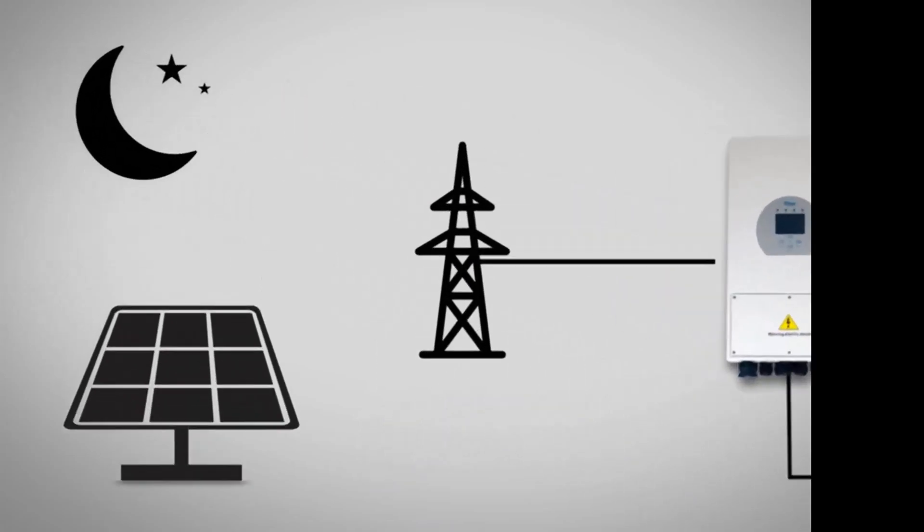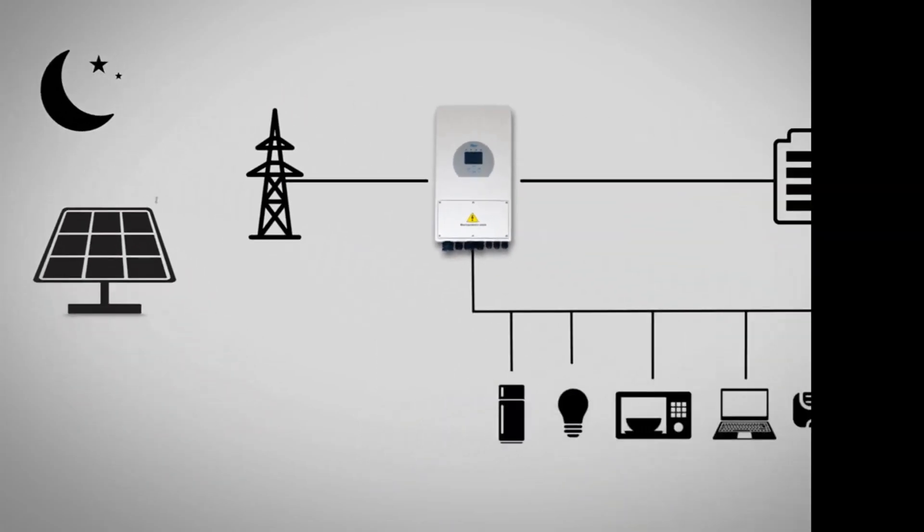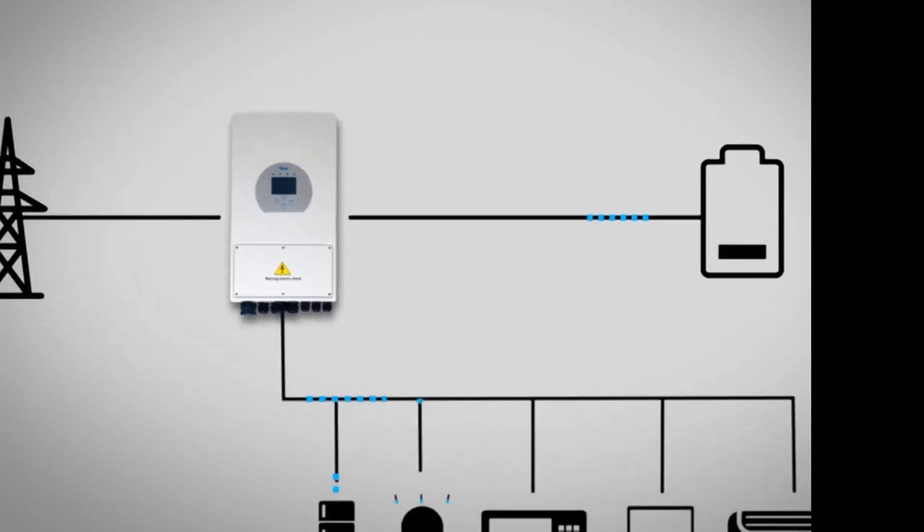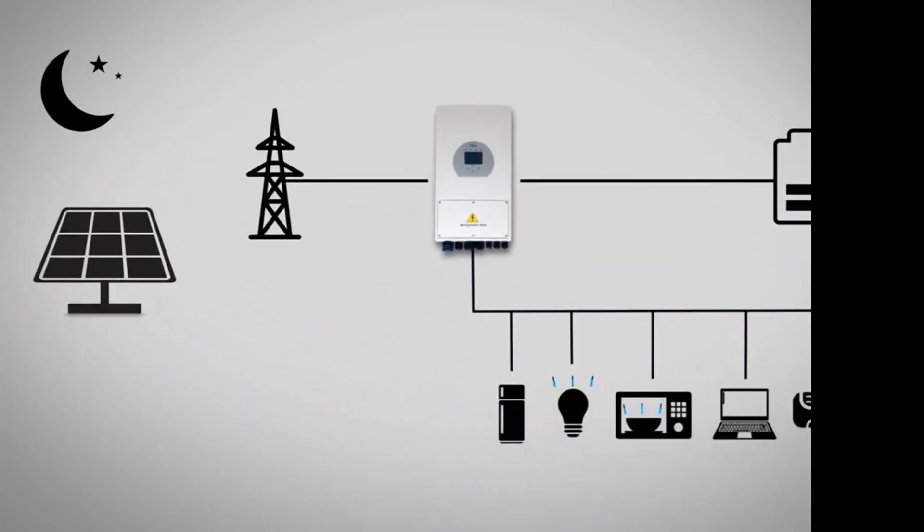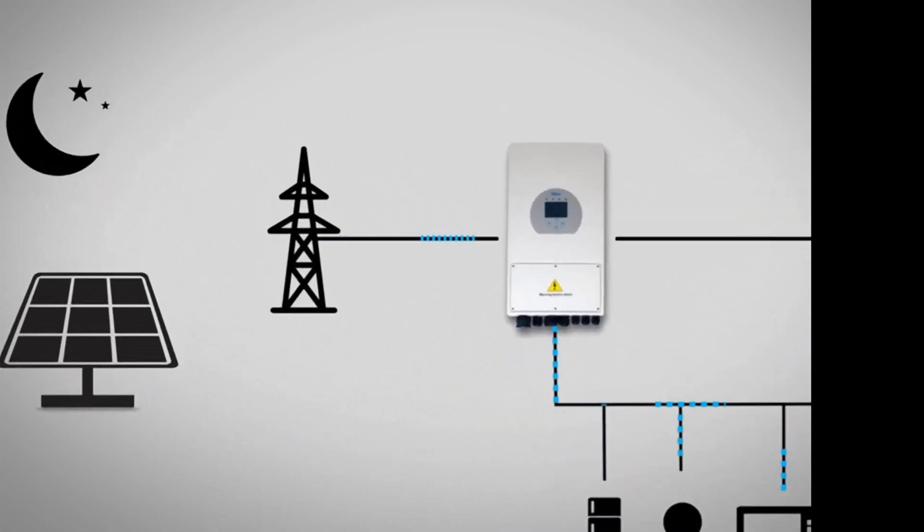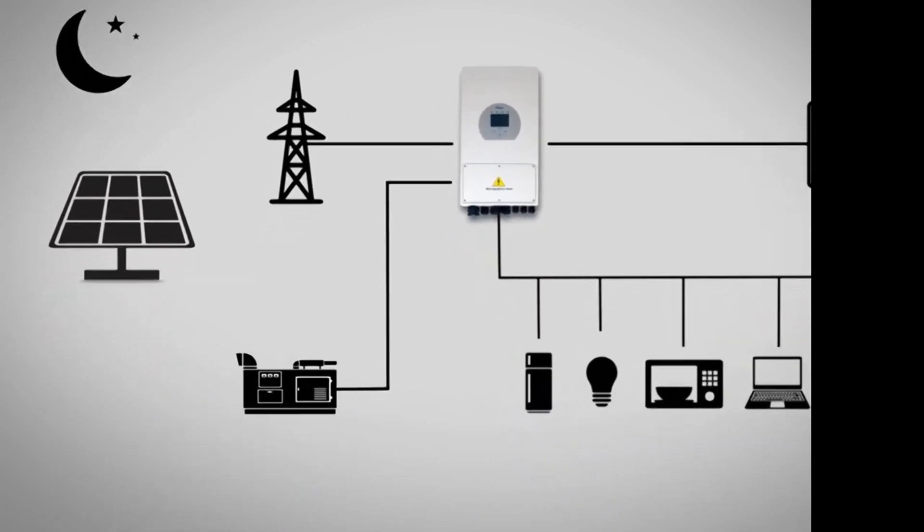Without the sun, the Daie Hybrid Inverter will automatically fill the consumption with storage energy. If this consumption exceeds the battery capacity, the inverter automatically supplements the needs with the energy coming from the grid, or even from a fuel generator.